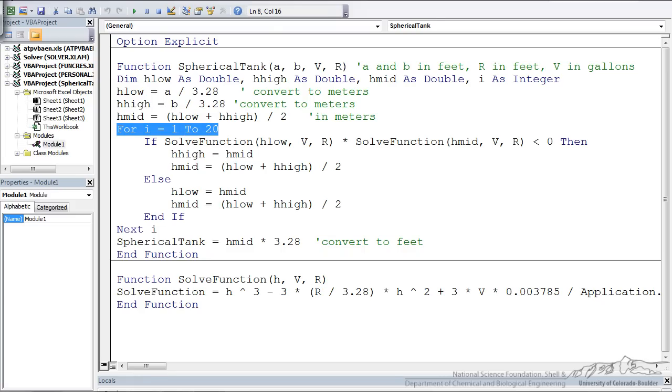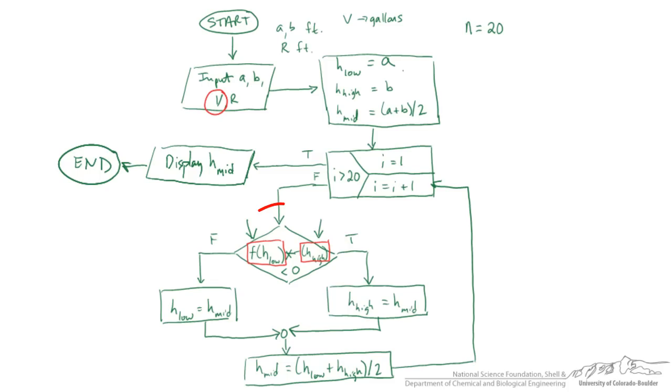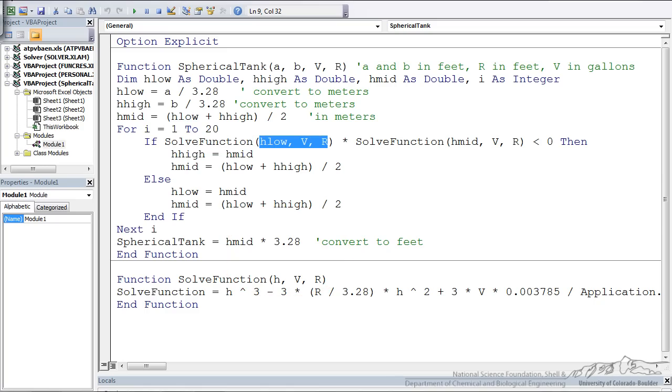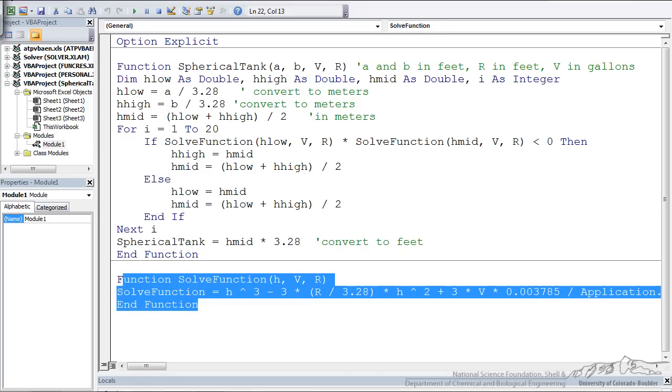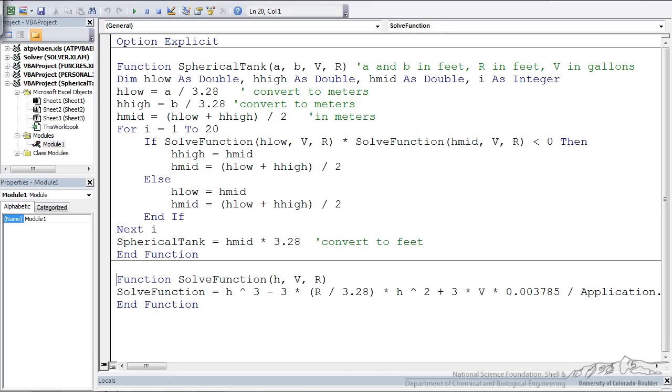We have our for next loop here. If solve function, this is where we're using these function values. So we're using a function within a function. And we look down here. I've defined another function. Solve function. And that's just the function that we're trying to zero.